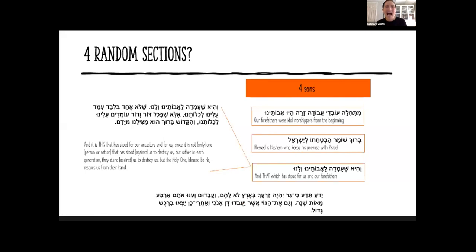V'hi She'amda takes a little bit of literary license here where it says, 'Shelo echad bilvad amad aleinu' - this Brit is not only talking about one nation, but it's talking about many nations. This is something that happened after Yetziat Mitzrayim, it continued throughout our history, and it continues as we know very well to happen to us today. But we should remember Hakadosh Baruch Hu will save us every time, over and over again.